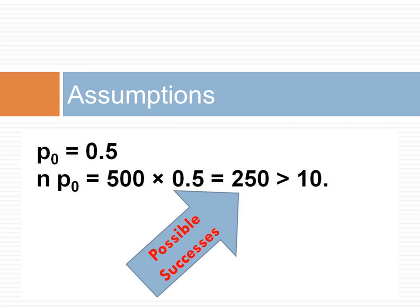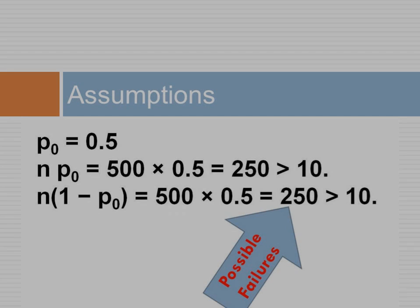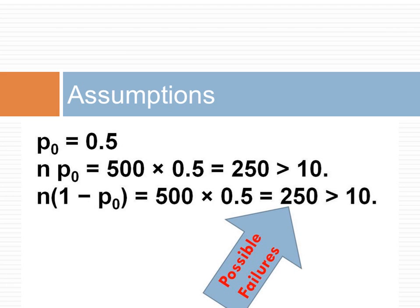The number of patients who use our service is expected to be 500 times 0.5, which gives us 250, which is higher than the 10 required. The same holds for the number of failures. Therefore, the success failure condition is verified. We can approximate the distribution of the rate as near normal distribution.